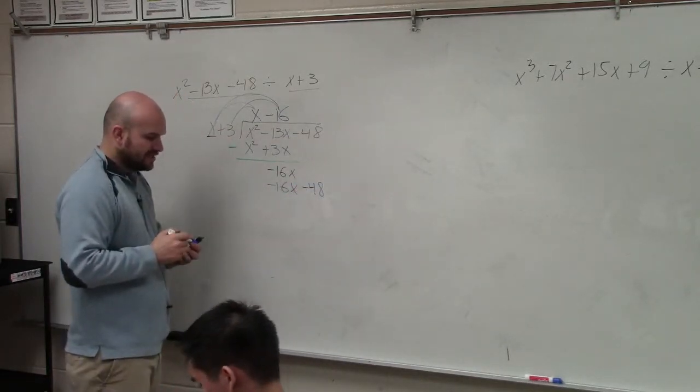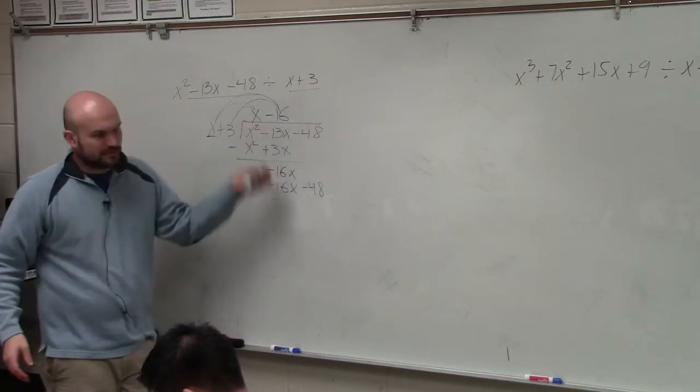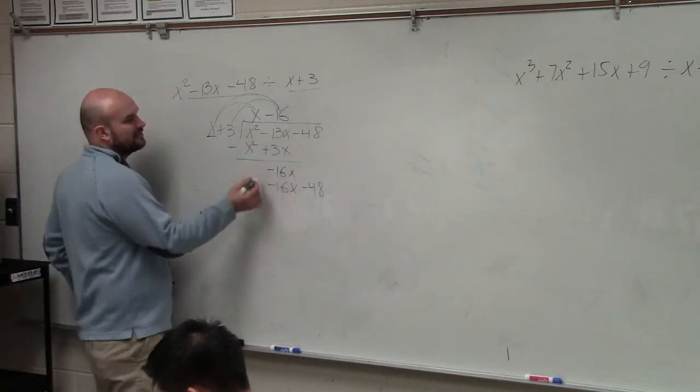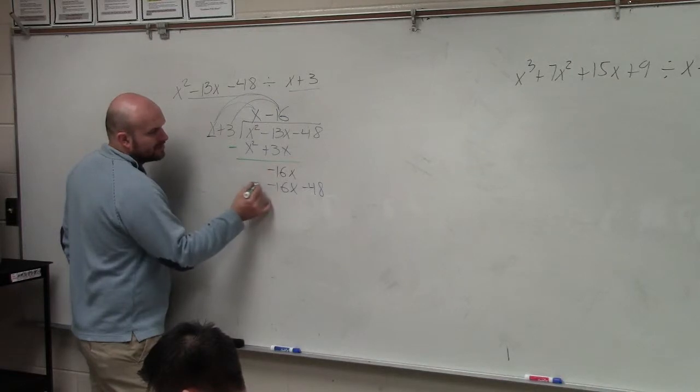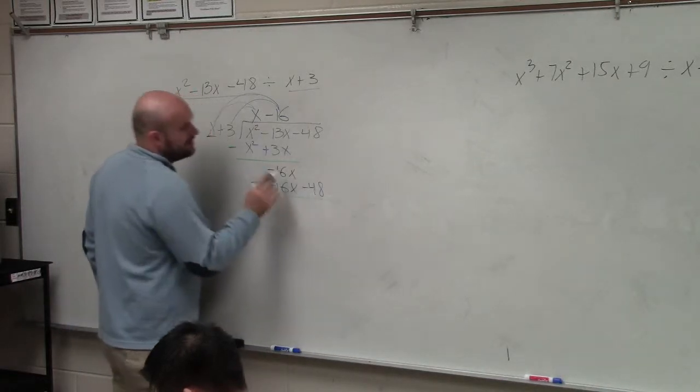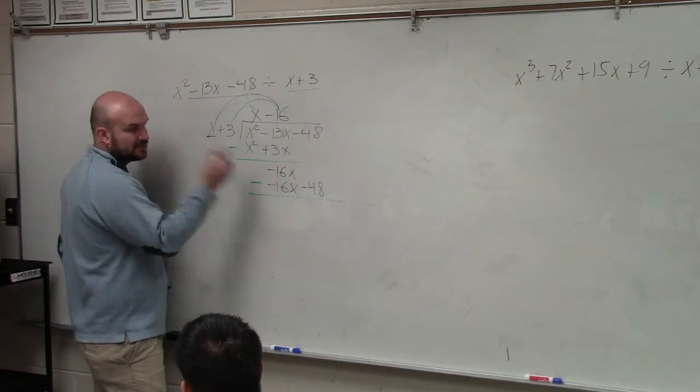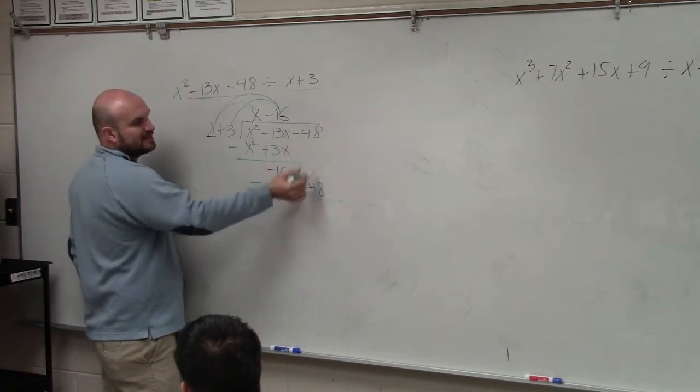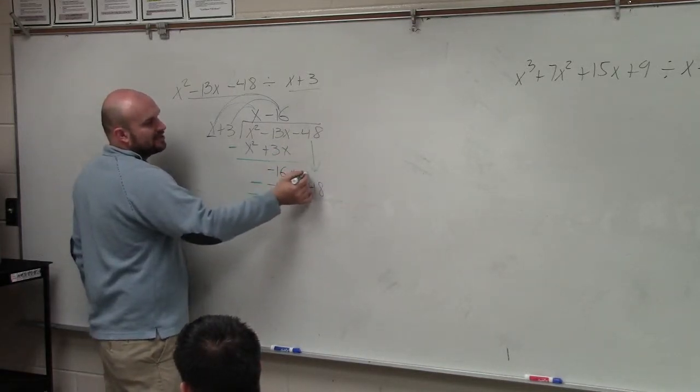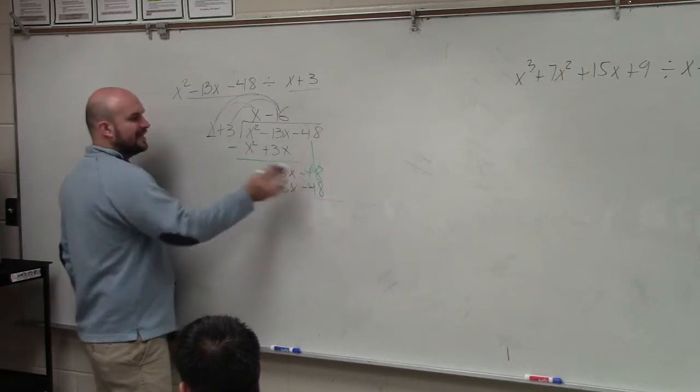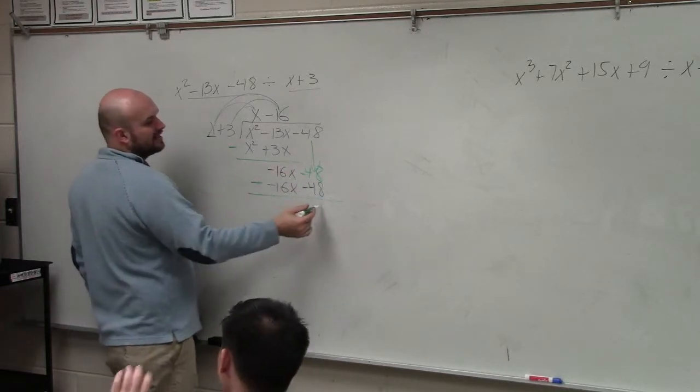-16 times 3 is -48. Then again, ladies and gentlemen, we subtract the two rows from each other. So again, I insert the negative. -16 minus -16, that becomes double negative positive, which goes to 0. Here, I can't subtract the -48, but it's actually all the way up here. -48 minus -48, again, is 0.